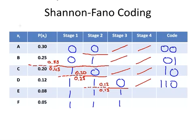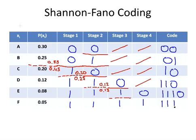There's only one way we can partition the remaining set, E and F. So, 0 and 1. E is coded as 1, 1, 1, 0. F is coded as 1, 1, 1, 1.